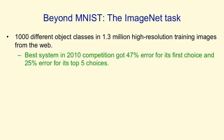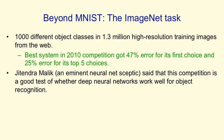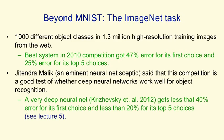Jitendra Malik, an eminent neural net skeptic and leading computer vision researcher, has said that this competition is a good test of whether deep neural networks can work well for object recognition. And a very deep neural network can now do considerably better than the thing that won the competition — it can get less than 40% error for its first choice and less than 20% error for its top five choices. I'll describe that in much more detail in lecture five.